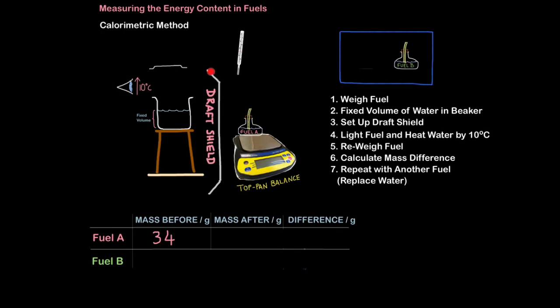You then set up a draft shield. This can be anything, some sort of structure, which prevents any draft from blowing the flame away from the beaker, as this could stop the amount of energy being transferred directly to the beaker of water and that will make it an accurate test as well.